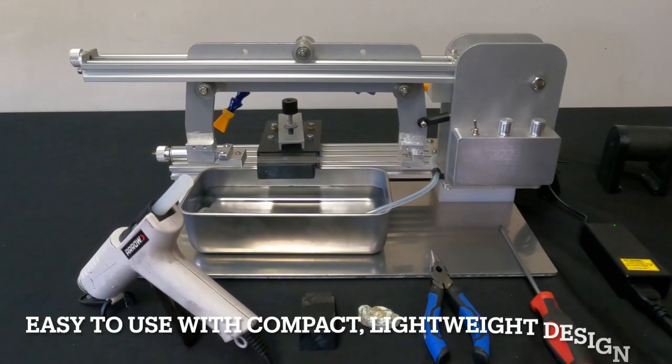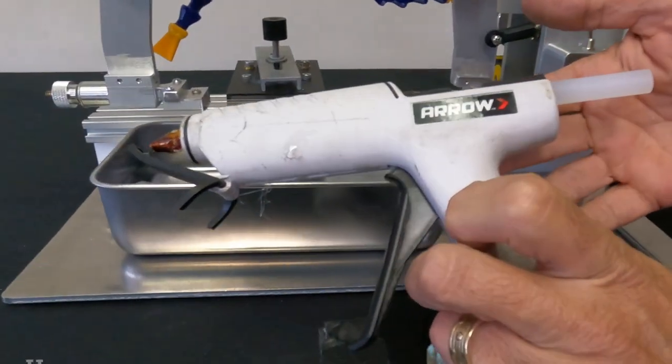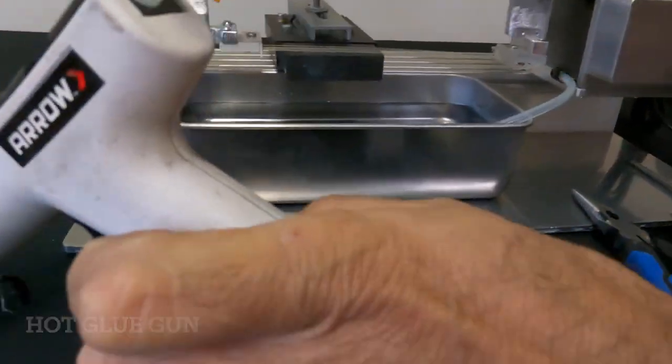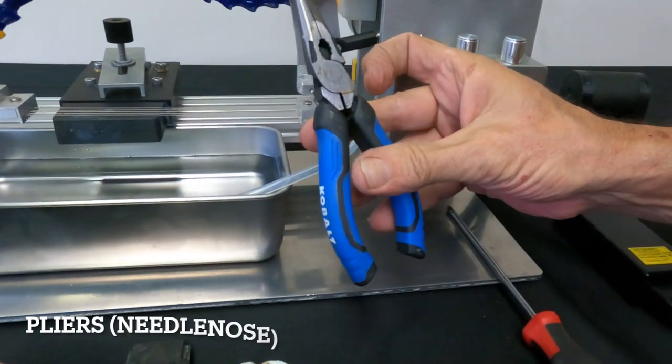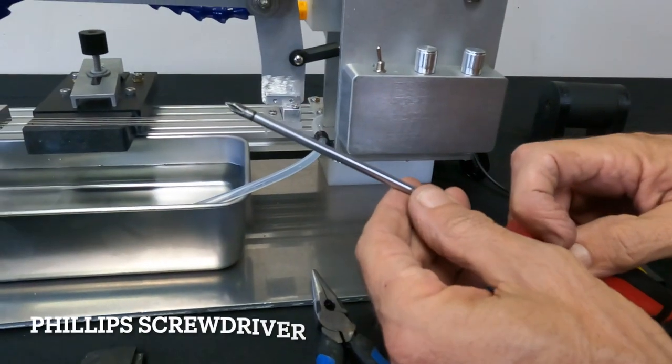I want to show you the basic operations of this machine. The tools you'll need is just a standard hot melt glue gun, a pair of pliers with cutters, and a Phillips screwdriver.